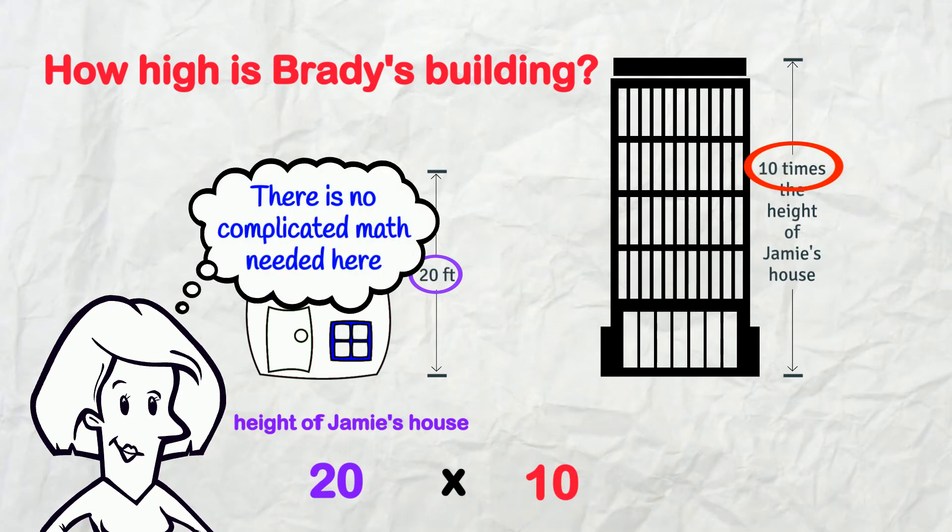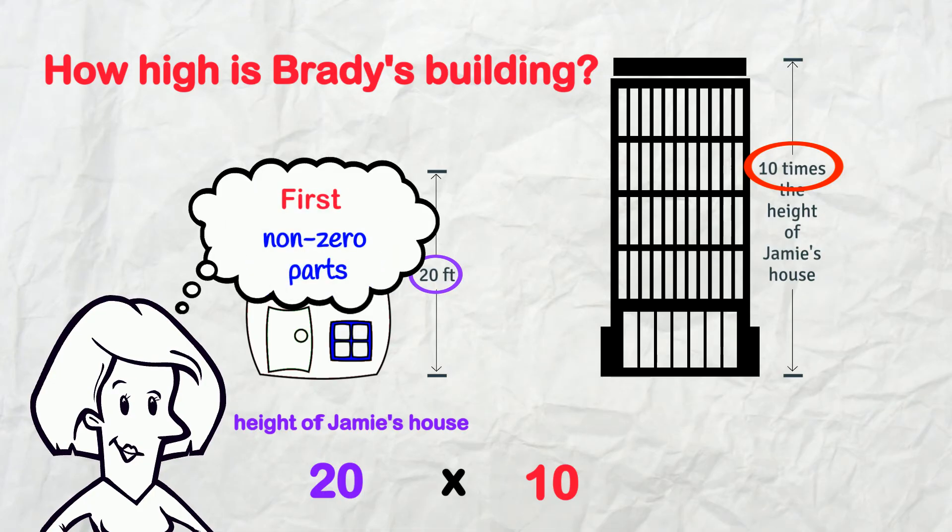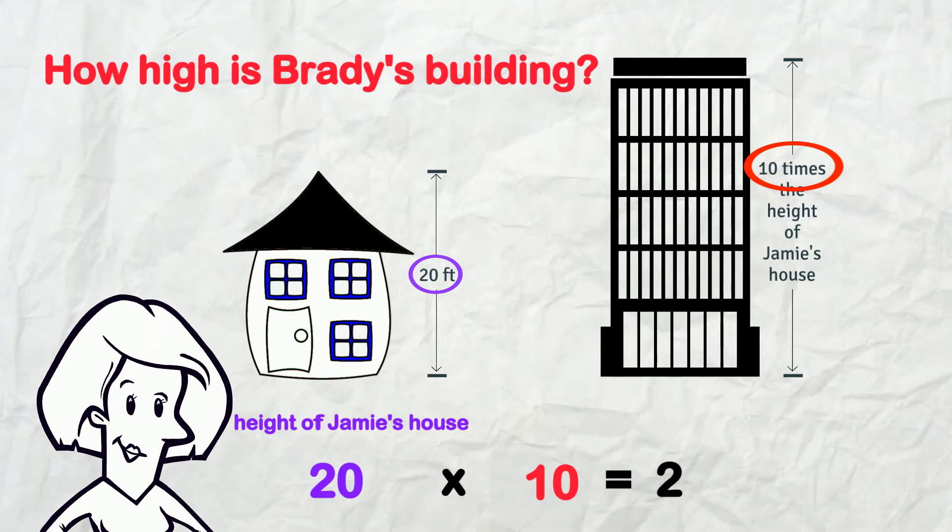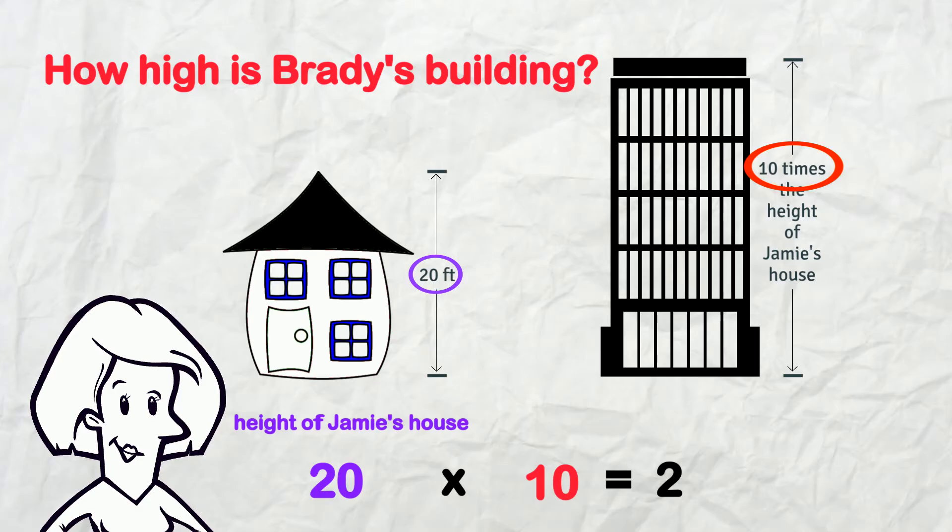There is no complicated math needed here. First, we deal with the non-zero parts. So 2 times 1 is 2. And then we just tack on those zeros. 20 times 10 is 200.